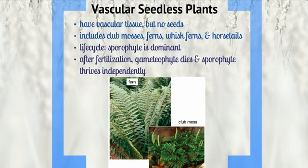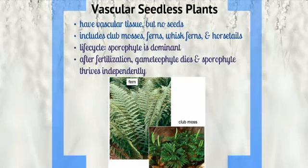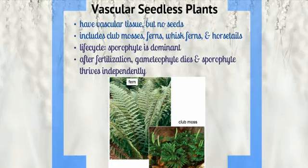Vascular seedless plants have vascular tissue but no seeds, and they grow taller than non-vascular plants because of this. Most have roots, stems, and leaves. Vascular seedless plants include club mosses, ferns, whisk ferns, and horsetails.